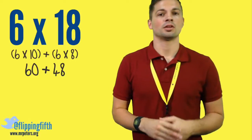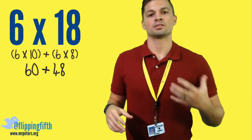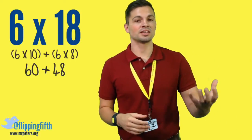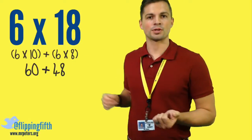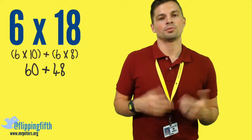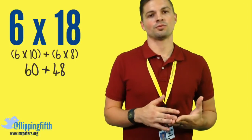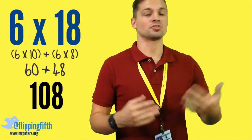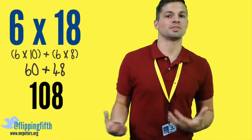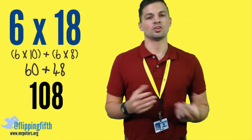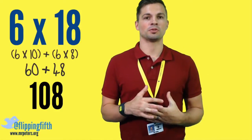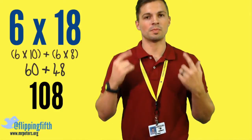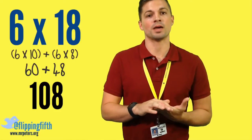6 times 8 is 48. So when we take 60 plus 48, we get our answer of 108. So 6 times 18 is 108, and that is how you use the distributive property to help you do math mentally.